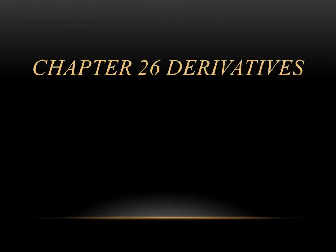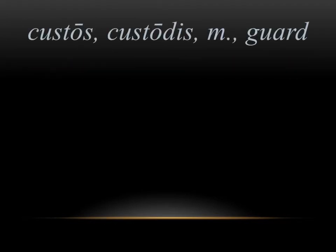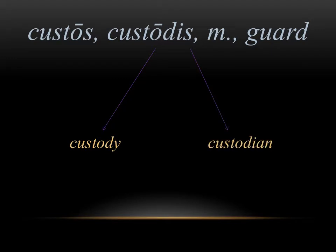To start, let's take a look at the derivatives. The first word we want to look at is custos, which means guard in Latin. In English, we get a couple of good derivatives from this — words like custody and custodian. It's actually related to the verb we've already seen before, custodire, which means to guard. This is just the noun form of it.